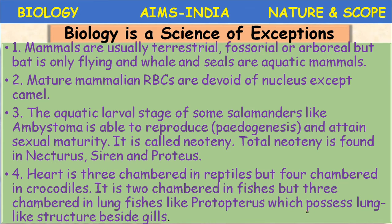Another exception: the heart is three-chambered in reptiles, but a four-chambered heart is present in crocodiles — the ventricle is partially divided. Fishes generally have a two-chambered heart, but there are three-chambered hearts present in certain fishes like Protopterus, also called the lungfish. Instead of gills, Protopterus possesses lungs as a respiratory organ, which is why they are called lungfishes.